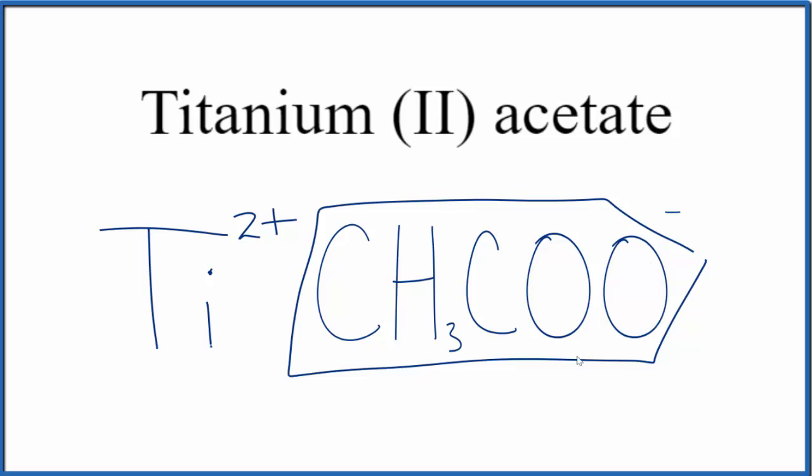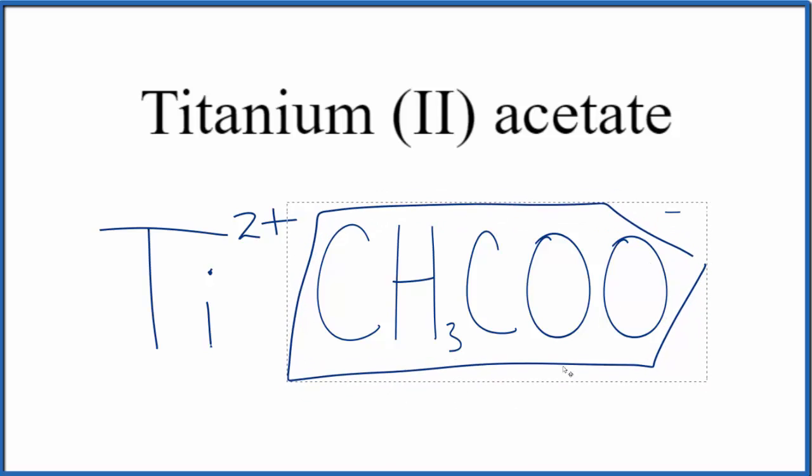We said that the acetate ion here, the charge on the whole thing is 1-. So if we had two of these here, 2 times 1-, that balances out the 2+.